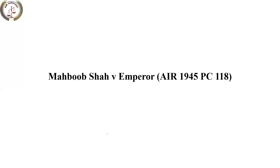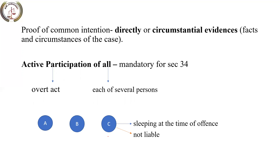How to prove intention: there are very few cases where common intention can be proved directly. It depends on the facts and circumstances of every case. The burden of proof is that common intention must be proved; if it fails, then the benefit of doubt goes to the accused and they are not liable. Until you establish common intention, liability under Section 34 cannot be imposed.